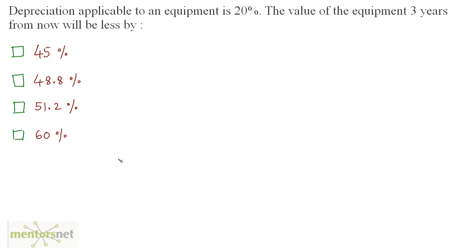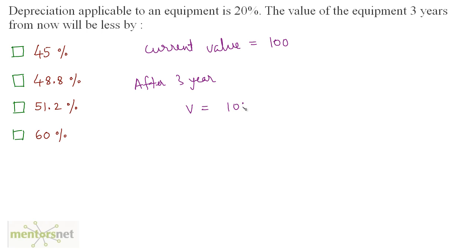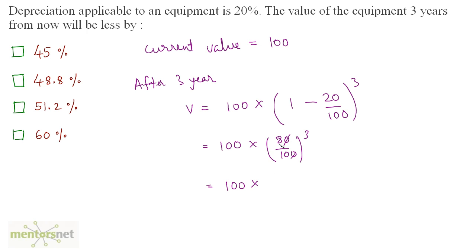The depreciation applicable to an equipment is 20%. The value of the equipment 3 years from now will be less by? Let the current value be 100 rupees. After 3 years the value equals 100 times 1 minus 20 upon 100, raised to 3. This equals 100 times 80 upon 100, cubed, which is 100 times 512 divided by 1,000. The zeros cancel, giving 51.2.